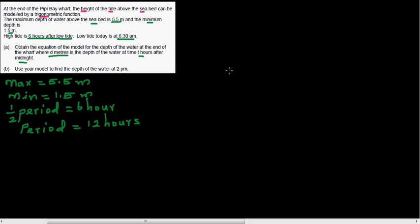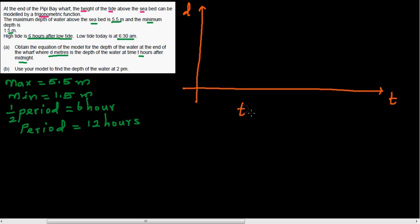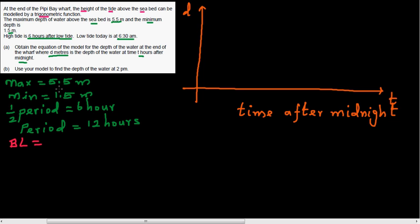Let's draw the x and y axes. On the y-axis we have d for depth of water, and on the x-axis we have t for time after midnight. We know the low tide is at 6:30 am. The baseline is the average of the maximum and minimum: (5.5 + 1.5) / 2 = 7 / 2 = 3.5.